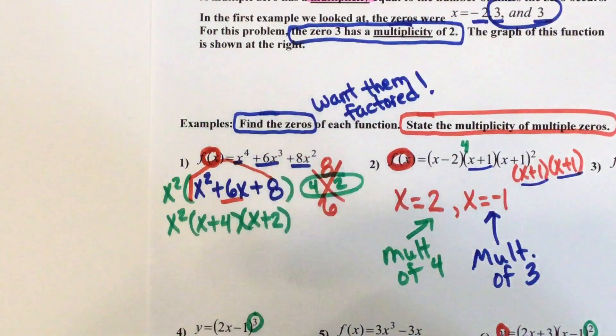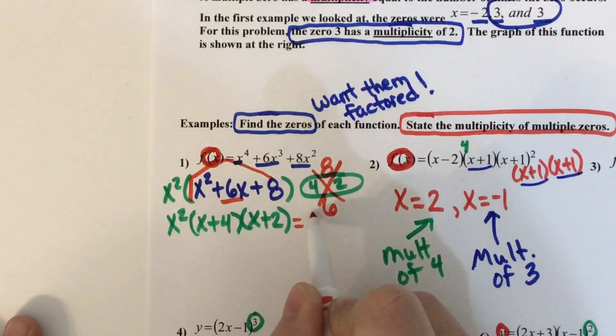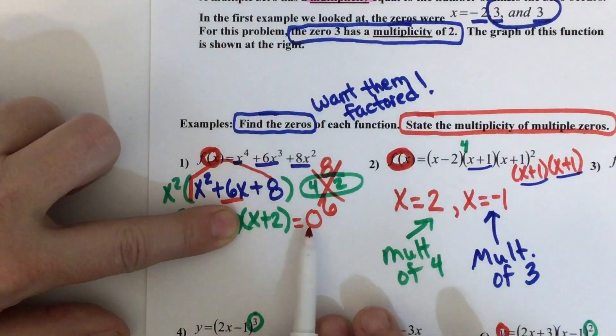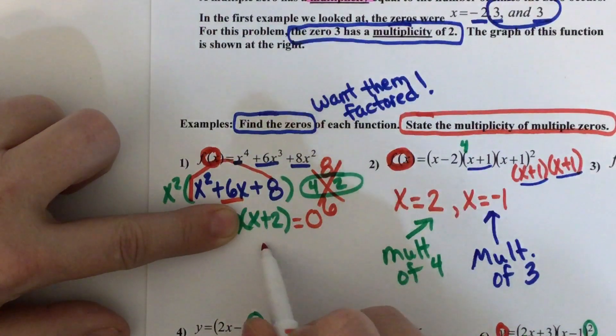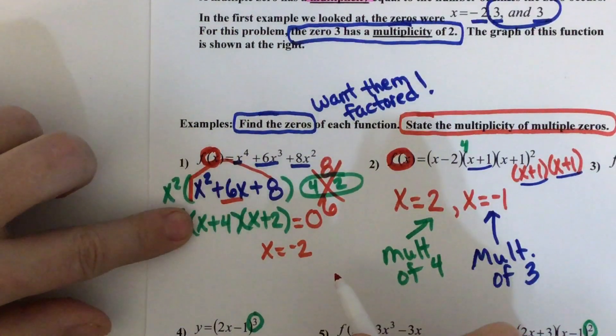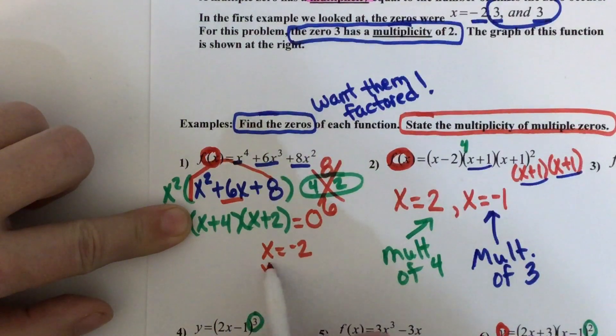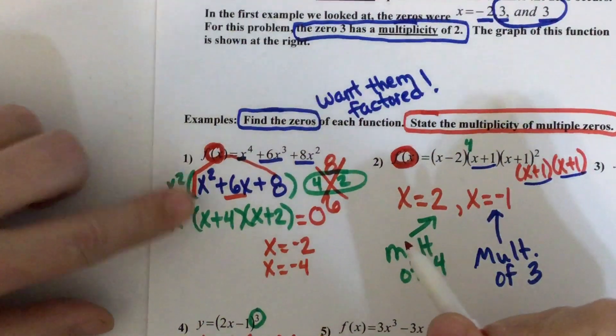Now it's factored, so it's just like all these others that are factored. I'm ready to find my zeros. Let's start with this one. What do you get if you solve x plus two equals zero? Negative two. What do you get if you set x plus four equal to zero? Negative four.